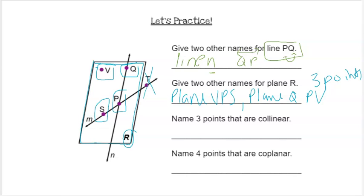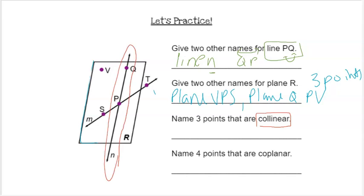Name three points that are collinear. Remember, collinear means existing on the same line. We look at our image. If we see line N only has two points on it. If we look at line M, it has three points on it. So those three points would be collinear. So S, P, and T are collinear points.